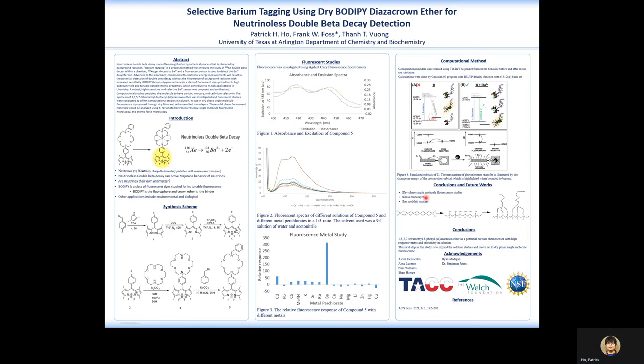In conclusion, fluorescent chemosensors were made to detect barium consisting of BODIPY and crown ether. My next objective is to finish my fluorescent studies by taking different amounts of barium and cadmium and creating a calibration curve.